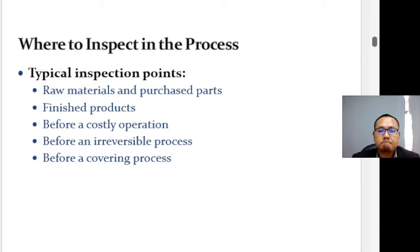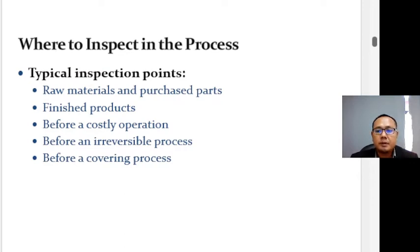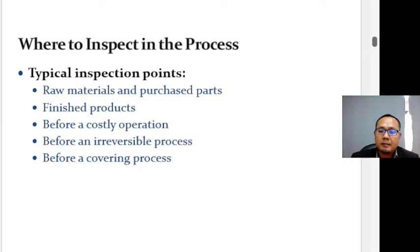Many operations have numerous possible inspection points. Because each inspection adds to the cost of the product or service, it is important to restrict inspection effort to the points where it can do the most good. In manufacturing, typical inspection points include raw materials and purchased parts, finished products, before a costly operation, or before an irreversible process. For example, pottery can be reworked prior to firing, but after that, defective pottery must be discarded or sold at a lower price.